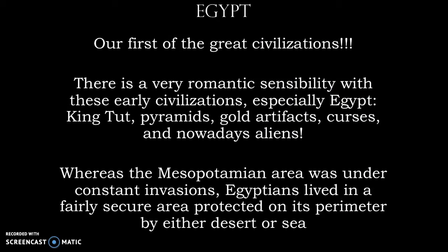Egypt is really the first great civilization we're going to cover. We'll also cover Greece and Rome in the next few chapters. There is definitely a romantic sensibility when we think about Egypt — King Tut and all those golden artifacts found in his tomb, pyramids, curses, and of course all the shows and books that talk about aliens. Egyptians were able to create a long-lasting civilization and preserve great monuments and artwork because their area was fairly protected from invasion — either desert or sea — compared to Mesopotamia, which always seemed under threat of invasion.